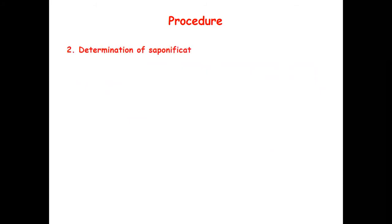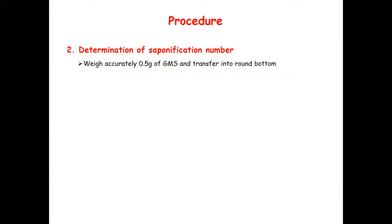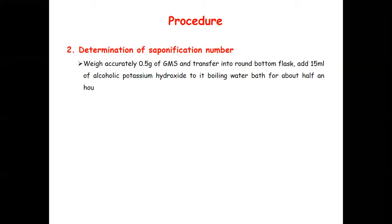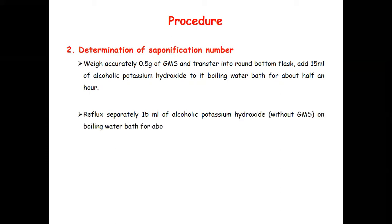Step two: determination of saponification number. Take 0.5 gram of GMS and transfer into a round bottom flask, then add 15 ml of alcoholic KOH. Reflux on a boiling water bath for about half an hour. Separately, reflux 15 ml of alcoholic KOH alone on a boiling water bath for one hour as a blank. You require two reflux assemblies — the first with GMS plus KOH, the second with only alcoholic KOH as the blank.